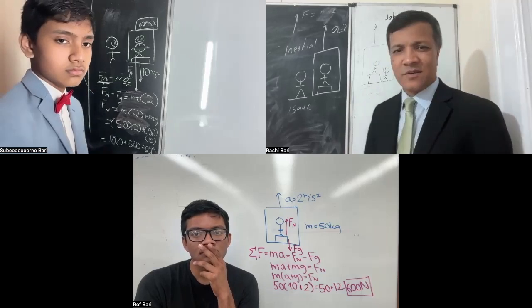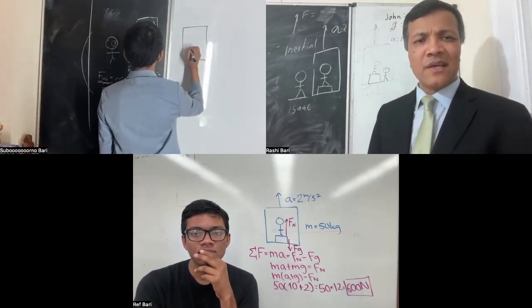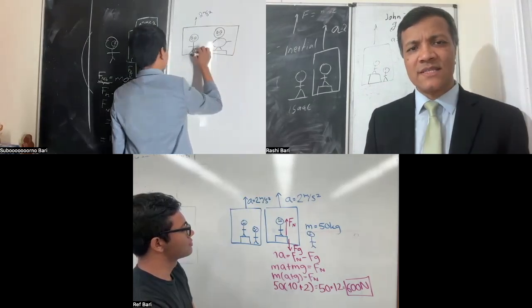And of course, John is there. John doesn't care. John is, I don't know. Nobody cares about John. Now we're going to measure everything in terms of Isaac's perspective. Isaac, look at the scale.